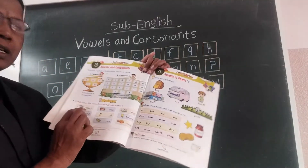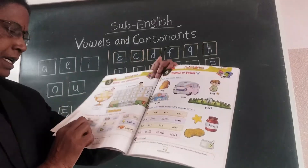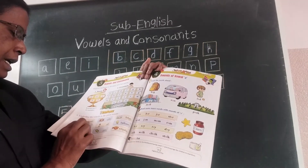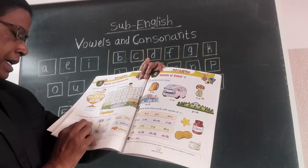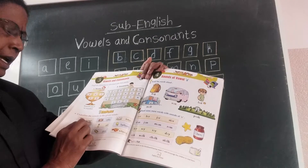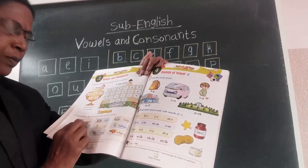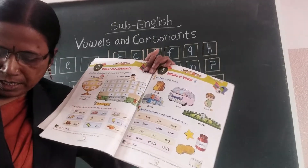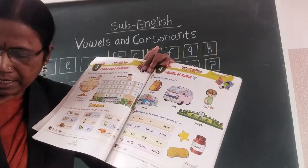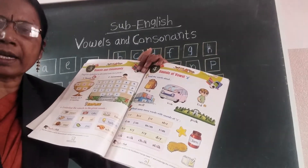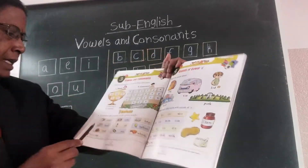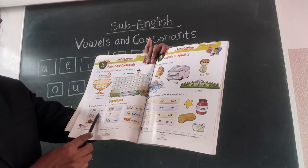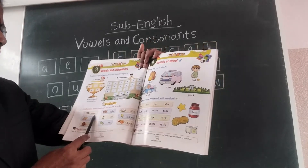Eraser. What is this? Eraser. Look here — E, A, E. These are vowels. Students, you have to underline the vowels in the word with a pencil. Underline the vowels.